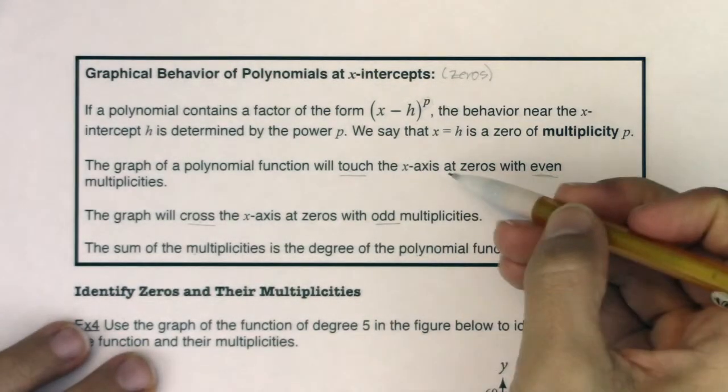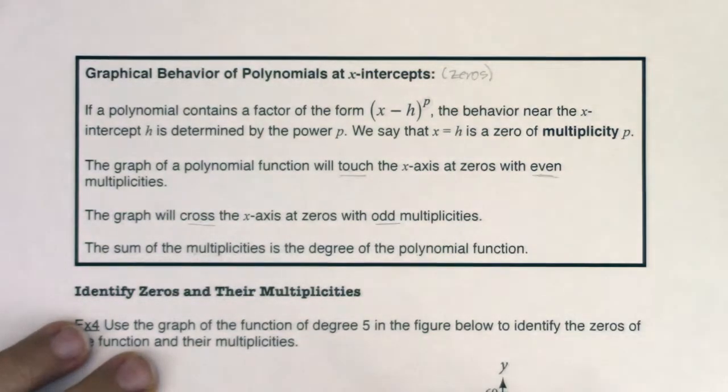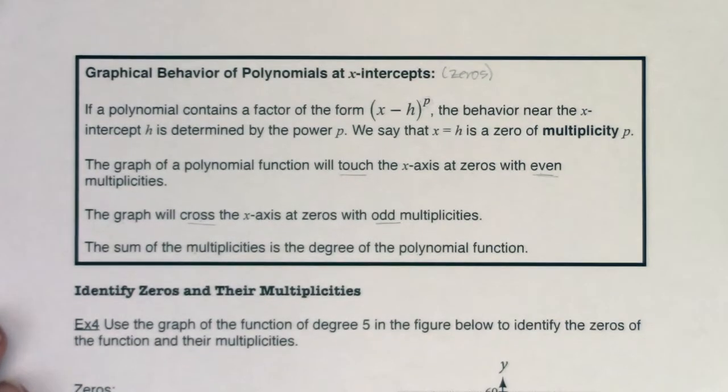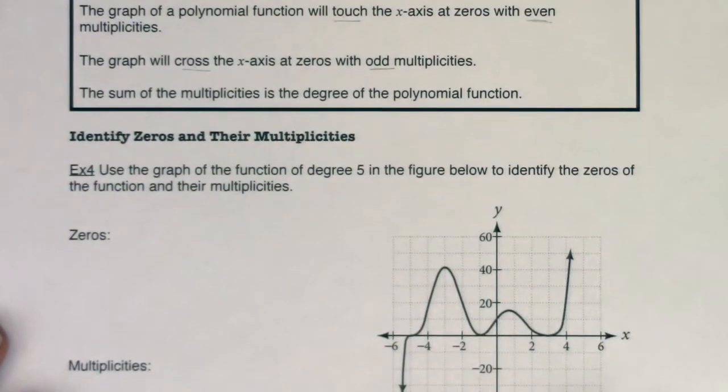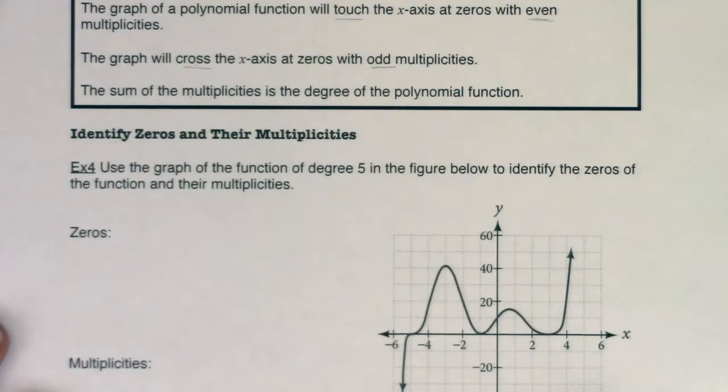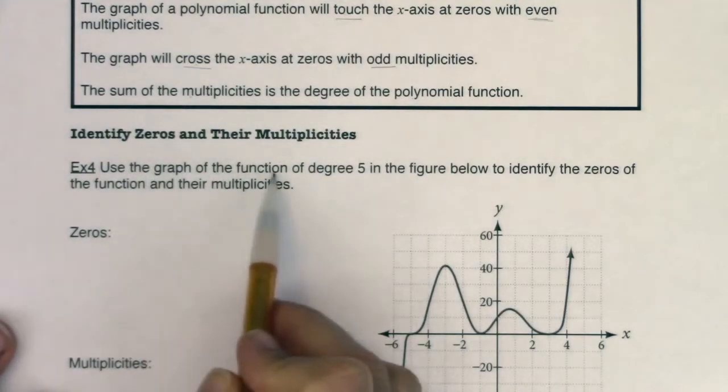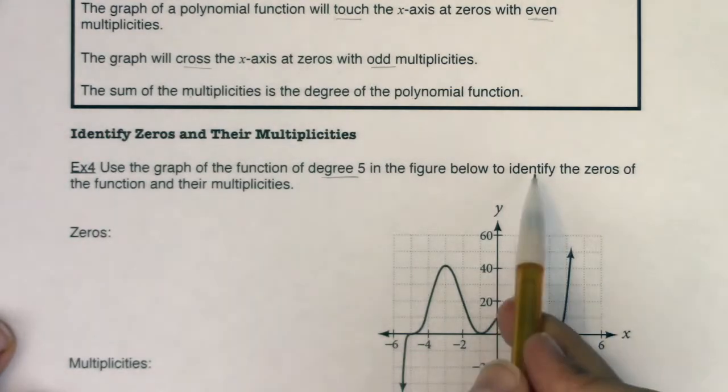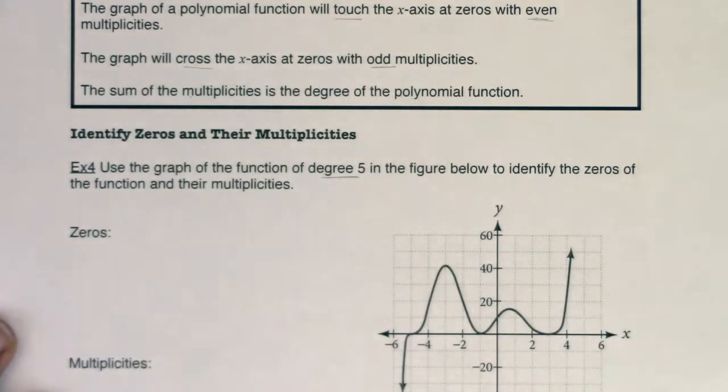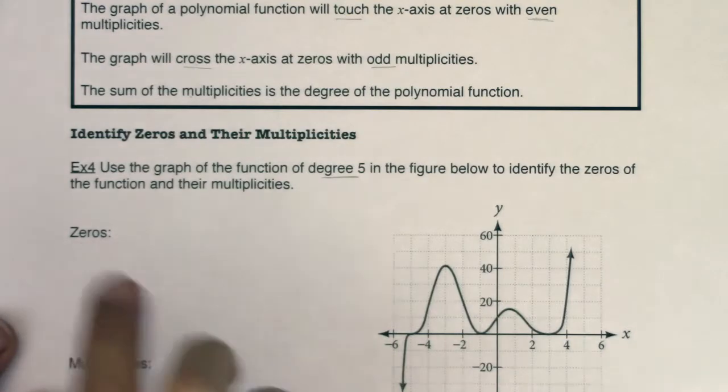So we're going to play these three ideas out with this example, and we're going to do it graphically for right now. It says use the graph of the function of degree 5 in the figure below to identify the zeros of the function and their multiplicities. Well, let's do the easier of these two questions right now. First of all, I'm told this is degree 5. They want the zeros.